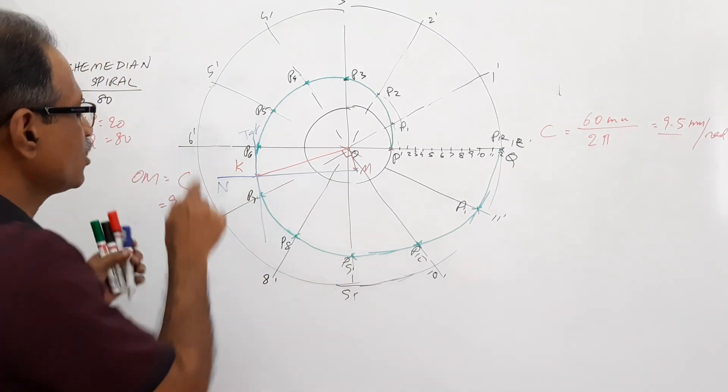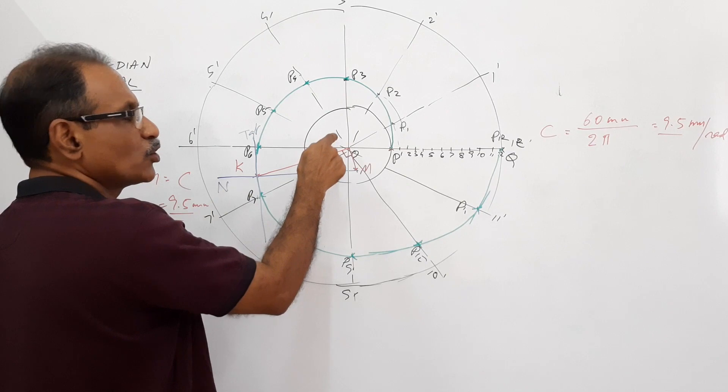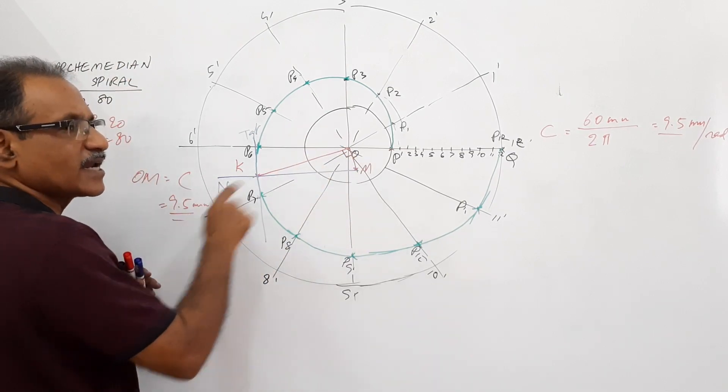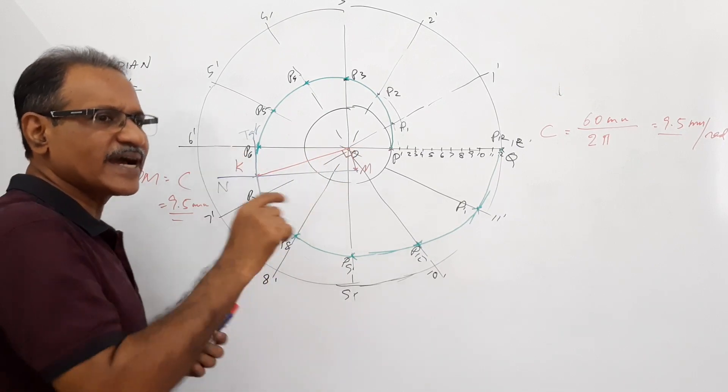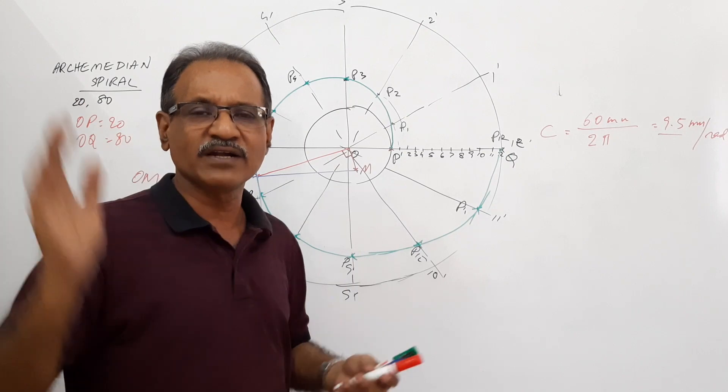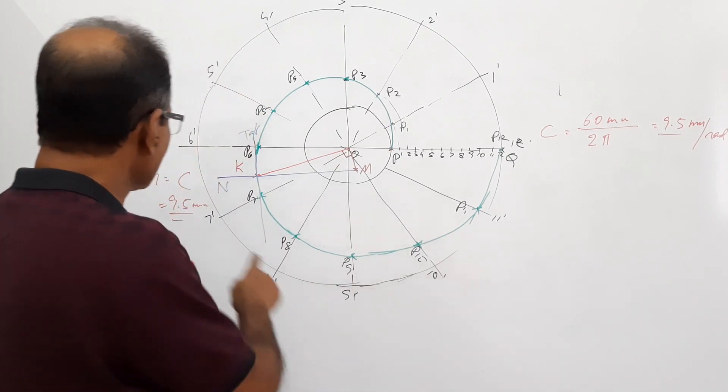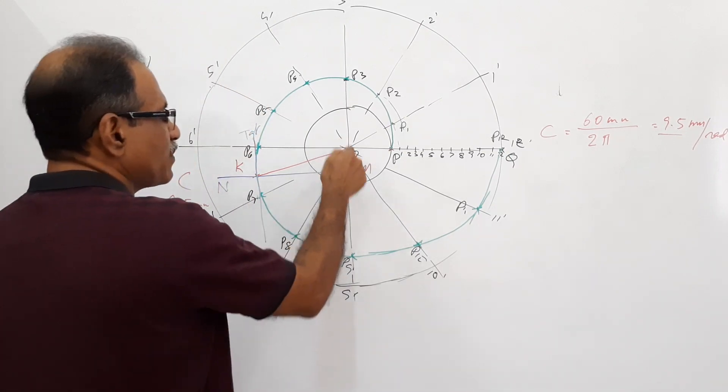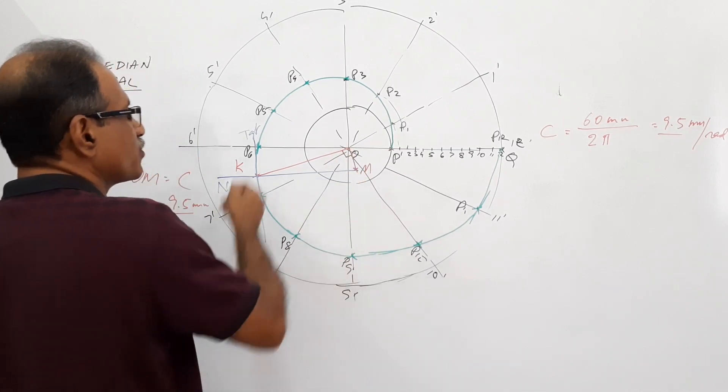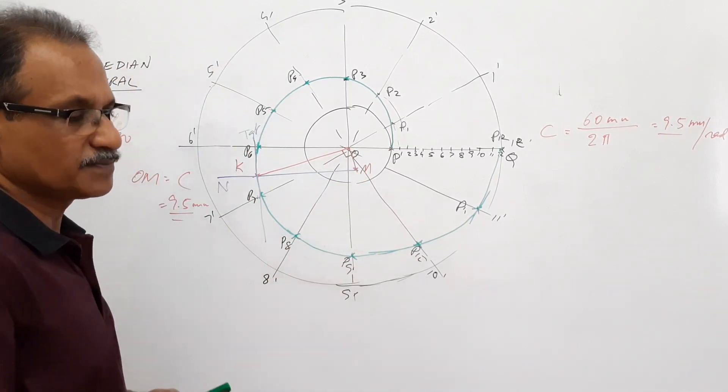I repeat. Locate Q. Join QO. Draw a perpendicular to O and locate M such that OM is equal to the constant C calculated. Constant is the property. Every Archimedean spiral will have a constant. Radial distance traveled divided by angle traveled in radians. You will get this 9.5 mm so draw a perpendicular and on that locate 9.5 mm by M. MQ is the normal, perpendicular to that is the tangent.